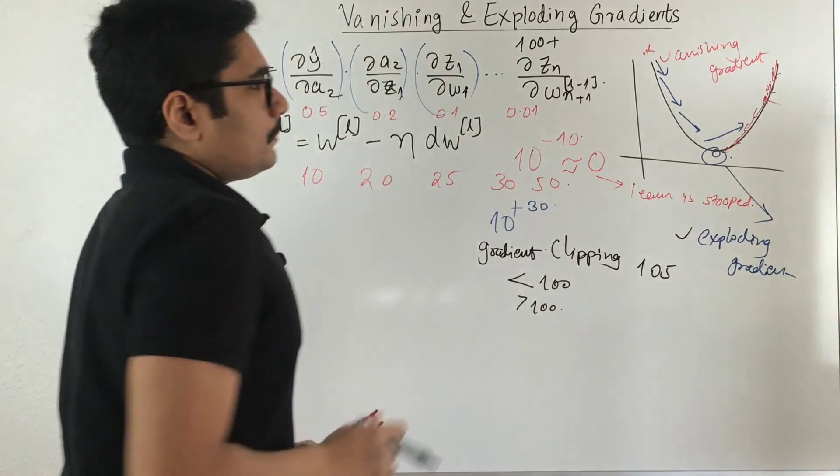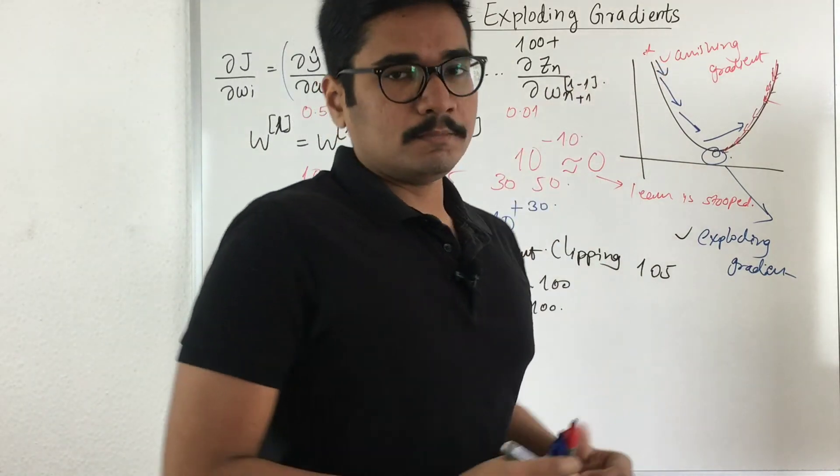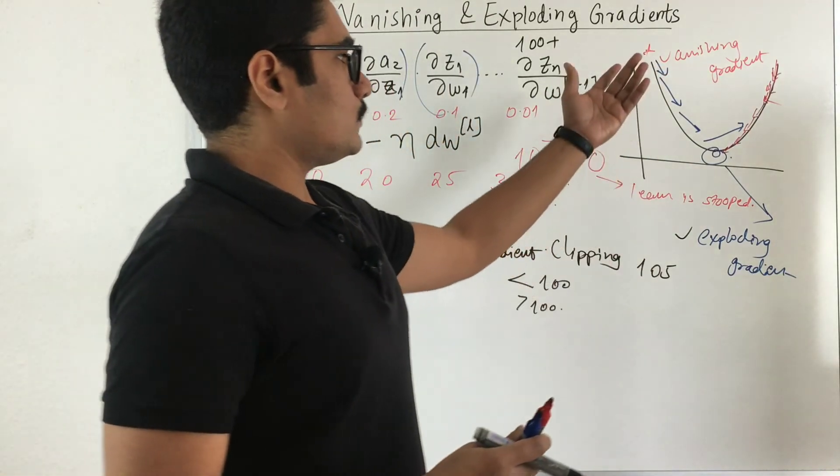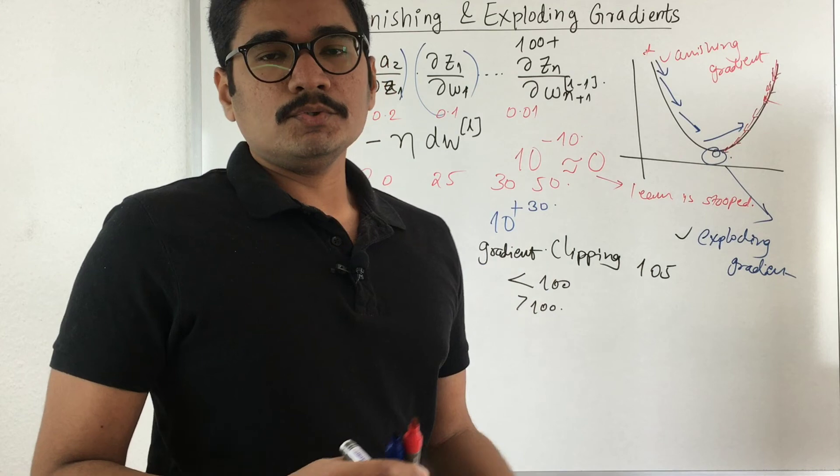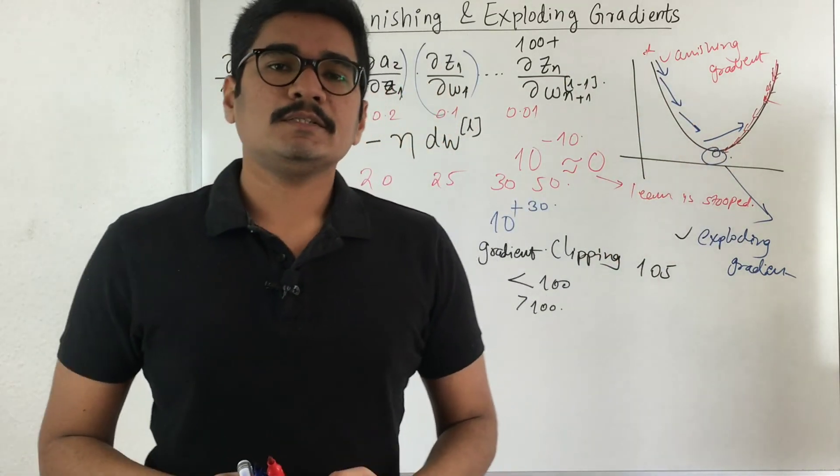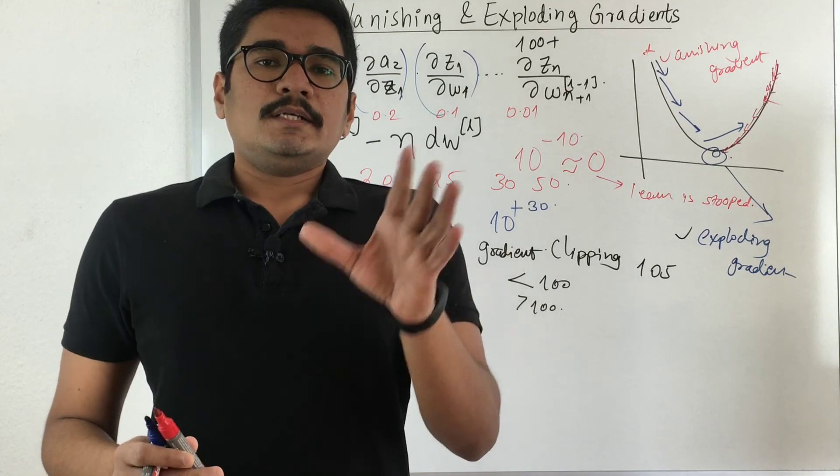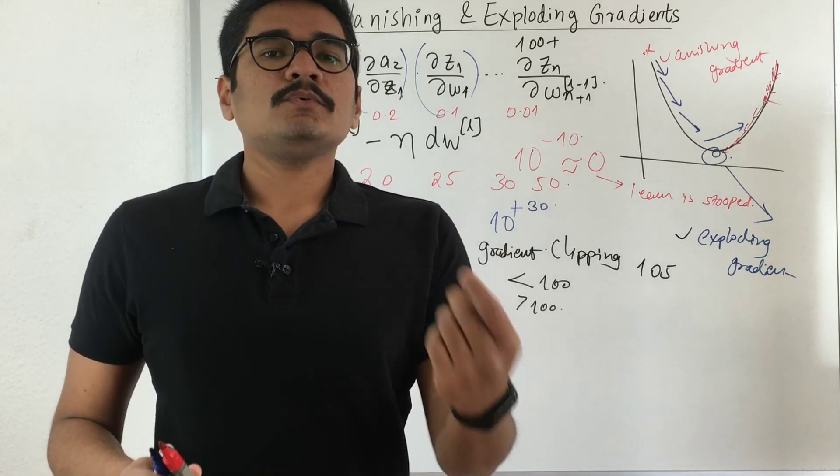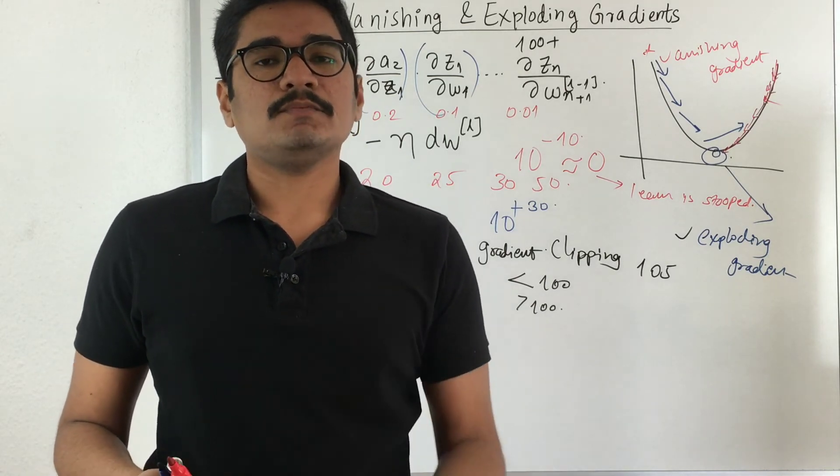But in practical, vanishing gradient is the most crucial problem when you deal with gradient descent, because you don't have any known solutions in order to treat this problem.